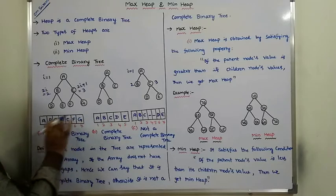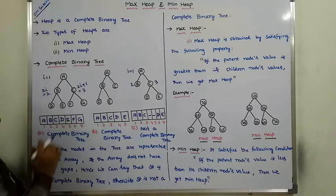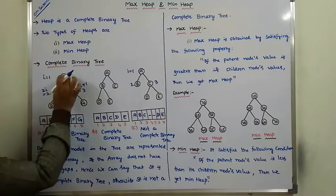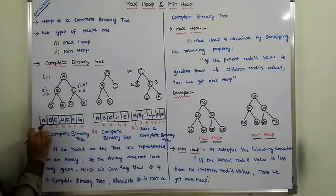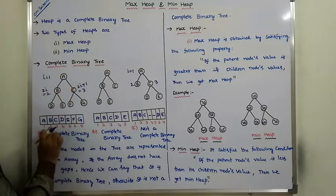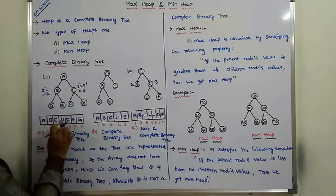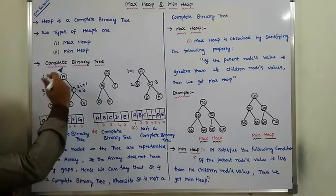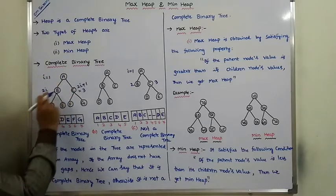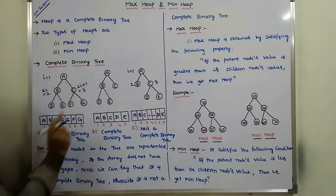The nodes are represented in an array level by level. In the first level, A is there. In the second level, B and C are there. In the third level, D, E, F, G are there. So the nodes are represented in the array level by level, following from left to right.